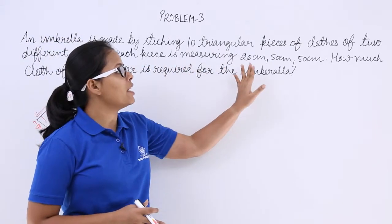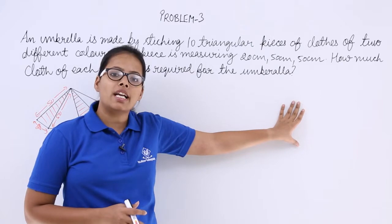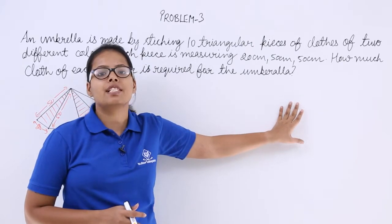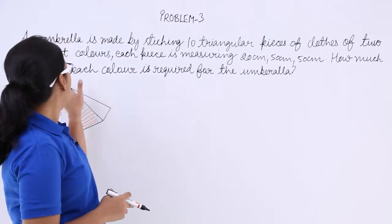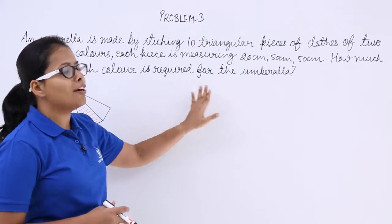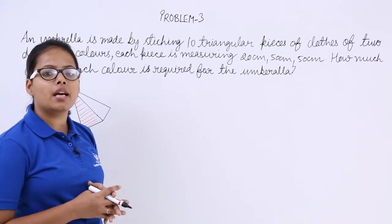Each piece is measuring 20, 50, and 50, which means all 10 triangular pieces have the same area. So how much cloth of each color is required for the umbrella? As we are using two different colors in the umbrella.